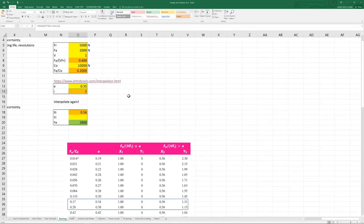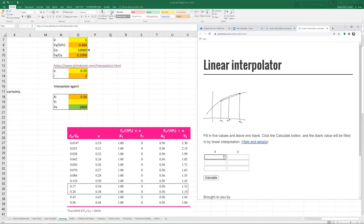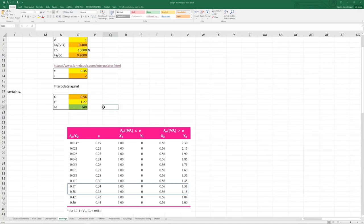Put that in here, and our i is 2. We can check that to make sure we're doing it correctly. Our FA over VFR value is 0.4, and that's greater than our e of 0.35. So that means we're going to use this x2, y2. So x2 is 0.56. And then y2, that's another interpolation that we need to do. So you have 0.17, 0.2, and 0.28, corresponding to 1.31, and 1.15. 1.27. So the equivalent radial load is 5,340. And remember, I have this in newtons. So that's the first part of this example.